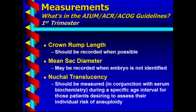Listed in the guidelines for the first trimester: the guidelines state that the crown rump length should be recorded when possible — which really means it should be measured and recorded as soon as the embryo is visible, at about six weeks. The mean sac diameter may be recorded when the embryo is not identified. The nuchal translucency should be measured in conjunction with serum biochemistry during a specific age interval for patients desiring to assess their individual risk of aneuploidy.